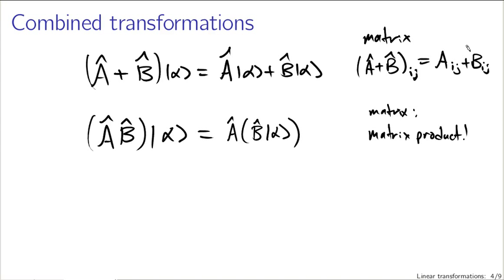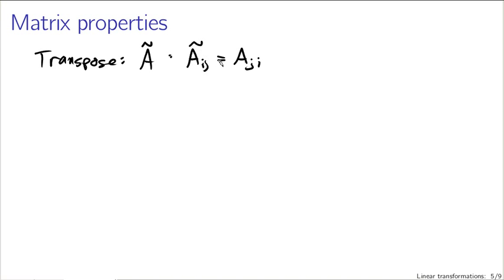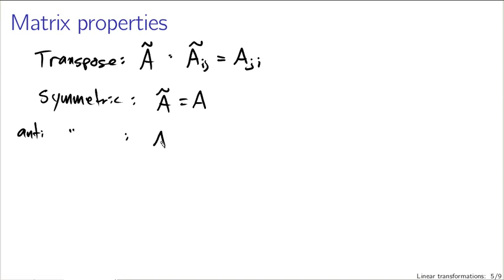We're going to be working with matrices quite a lot, so it helps to know their properties. One thing we can do with matrices is take the transpose, denoted by putting a tilde over the matrix. The ijth entry of the transpose of A is A_{ji} — exchanging the order of the indices, essentially flipping the matrix across the diagonal. We say a matrix is symmetric if the transpose equals the matrix, and anti-symmetric if taking the transpose gives the matrix back with a minus sign.